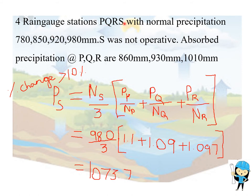Four raingauge stations P, Q, R, S with normal precipitation are 780mm, 850mm, 920mm, and 980mm. Station S was not operative. Observed precipitation at stations P, Q, and R are 860mm, 930mm, and 1010mm. Now we are going to find the observed precipitation at station S. We already know two formulas to find the observed precipitation.